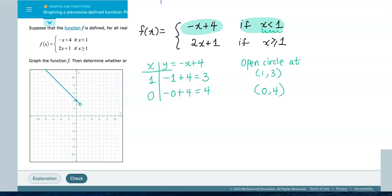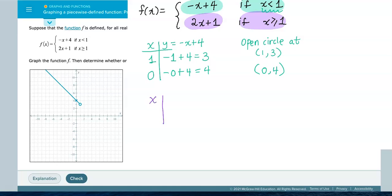Second equation, the domain is if x is greater than or equal to 1, double it and add 1. That's what they want you to do. So x and y, the first x value I must use is 1, and the next x value must be just bigger than 1, so I'll go with 2. Y is 2x plus 1. So if I plug in 1, I will get 2 times 1 plus 1, which is 3. 1, 3, what kind of circle should it be? Because it says greater than or equal to, we must plot a closed circle at 1, 3.